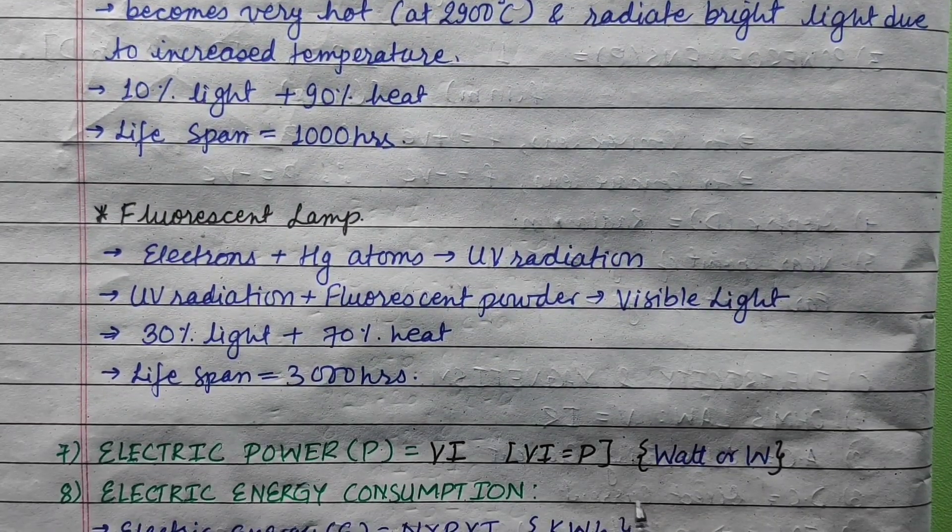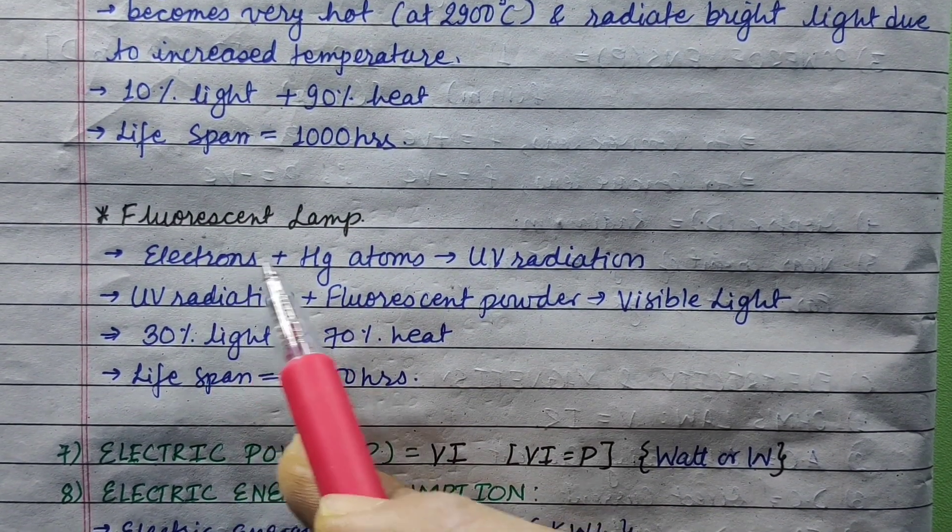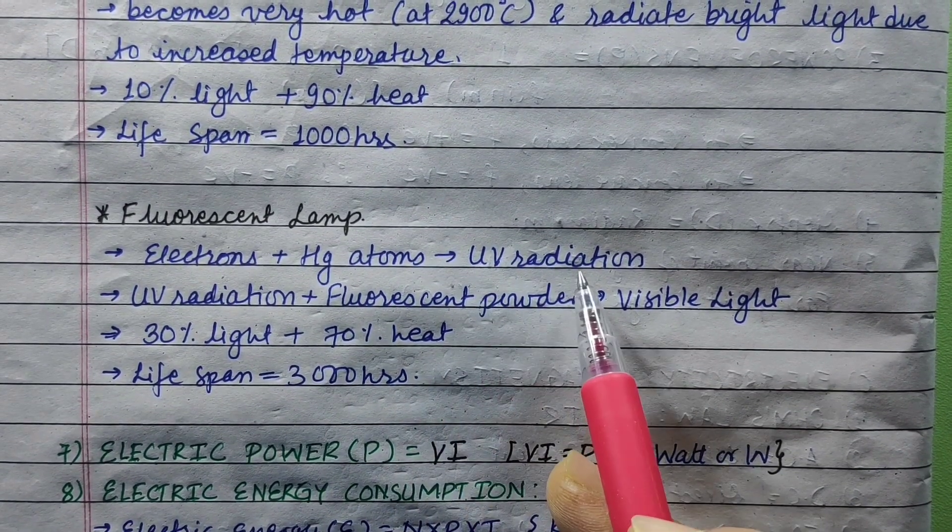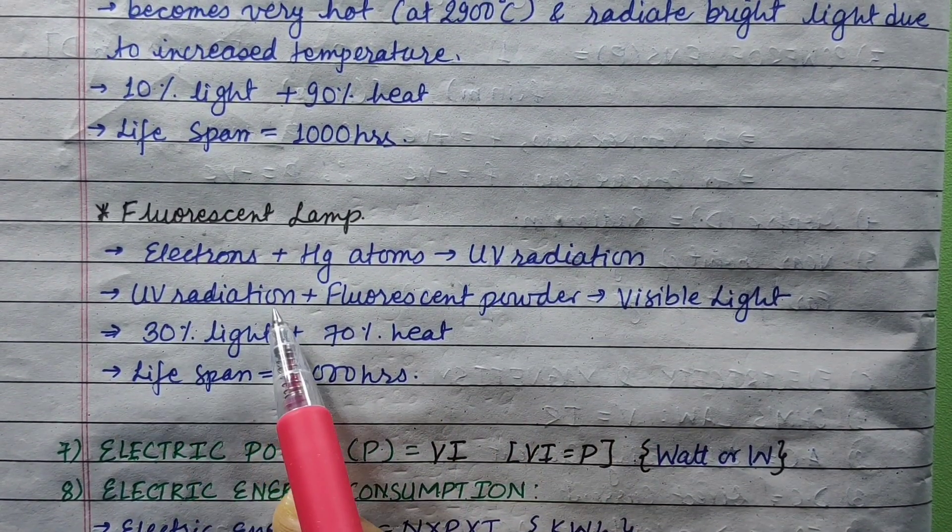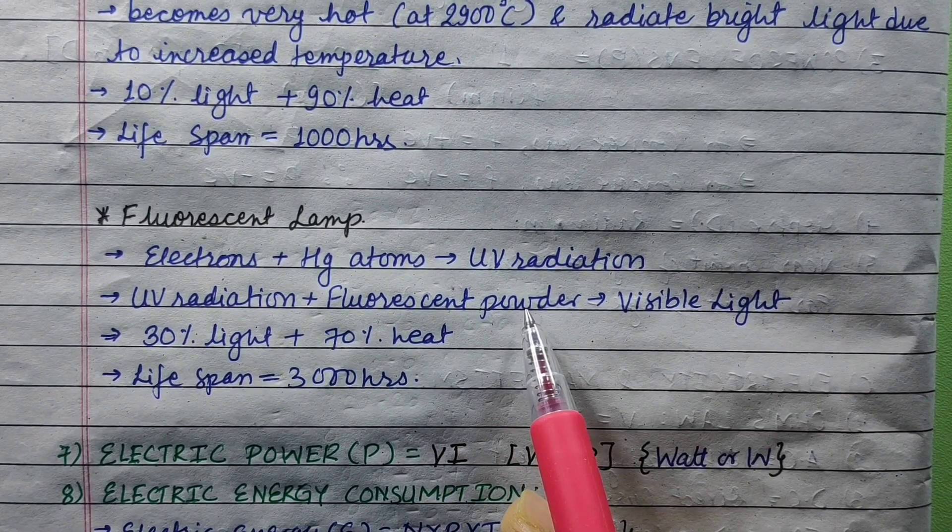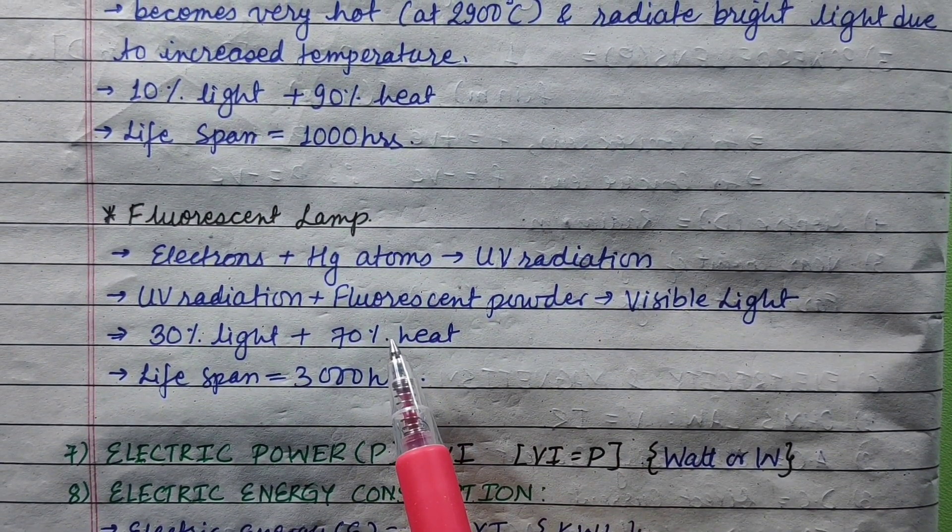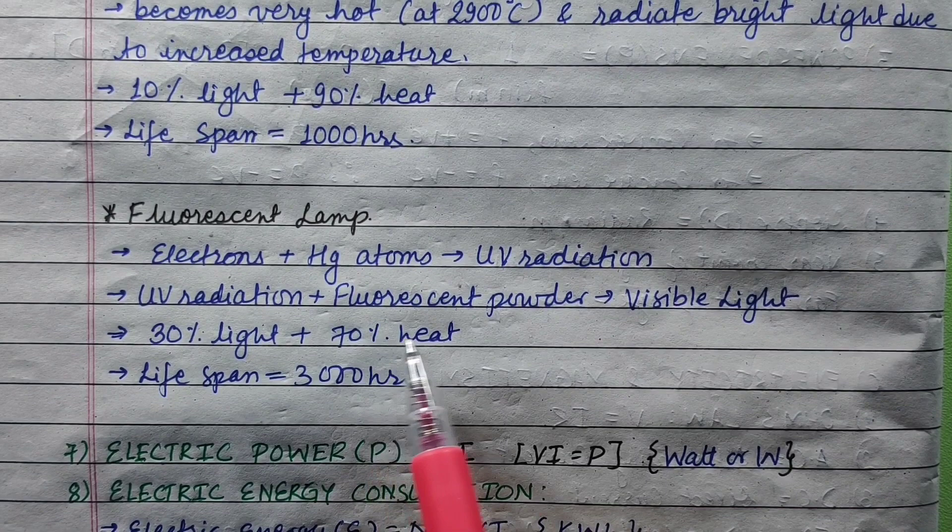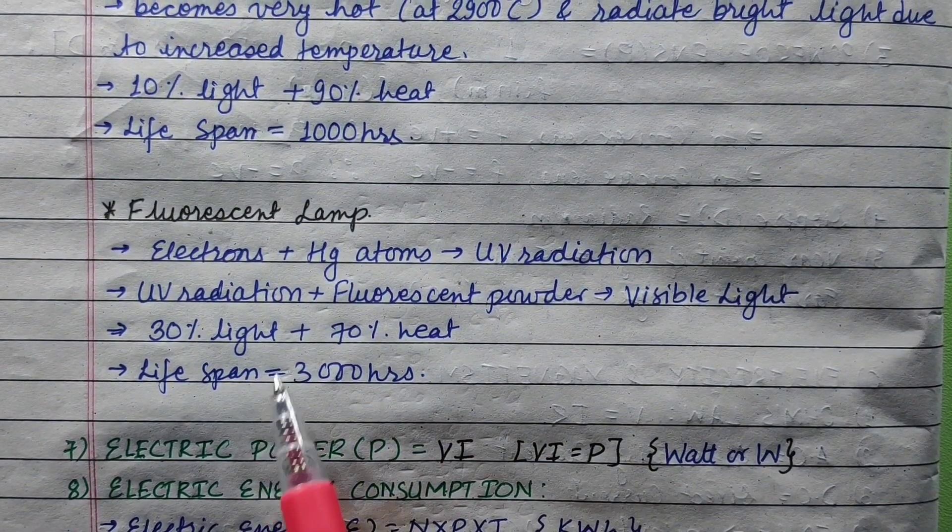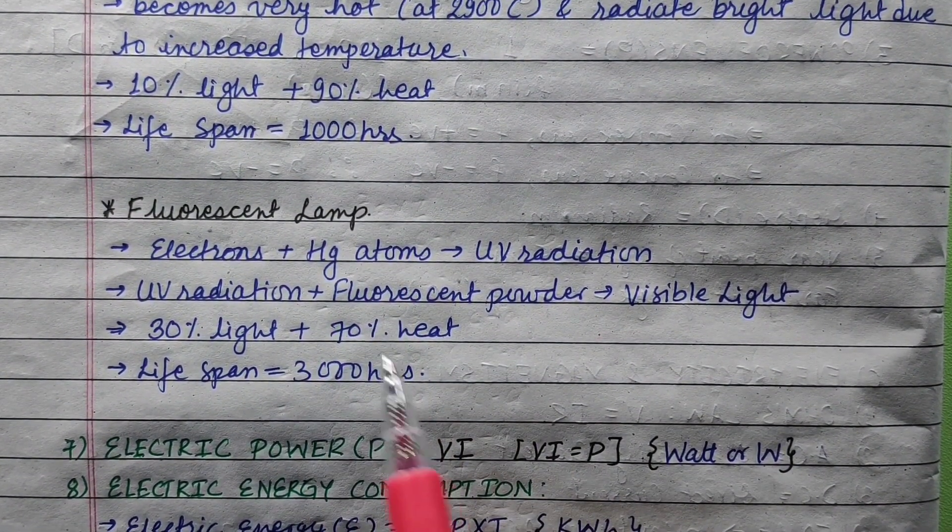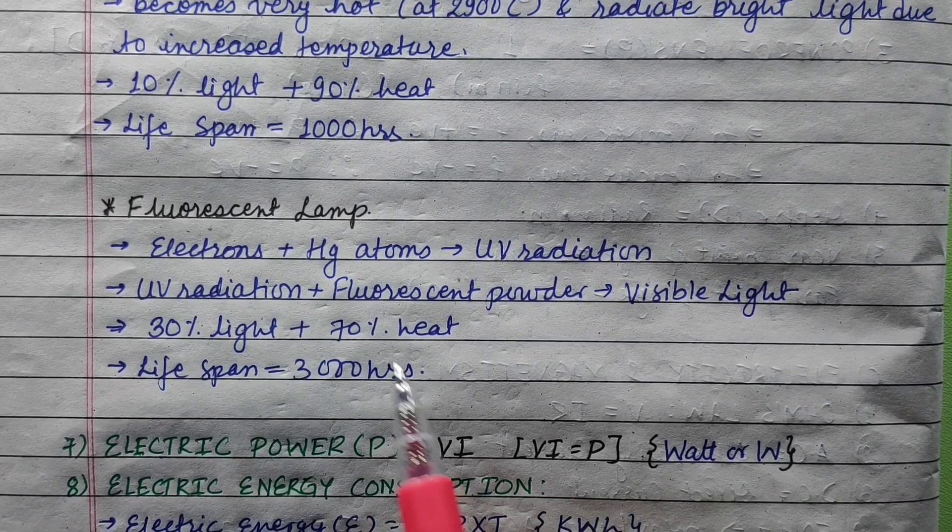In fluorescent lamp, moving electrons collide with mercury atoms and UV radiation is emitted. The UV radiation hits the fluorescent coating or powder and visible light is emitted. Fluorescent lamp is more efficient, producing 30% light and 70% heat, with a lifespan of 3000 hours compared to filament lamp's 10% light and 1000 hours lifespan.